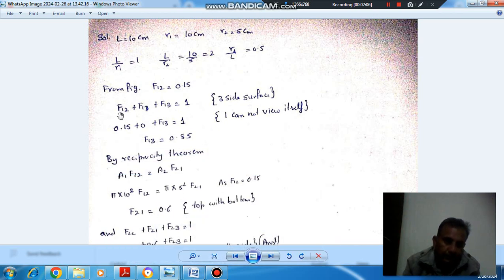Now we know that if we take surface 1 and consider all the possible shape factors, then the summation of the shape factors will be 1. The possible shape factors are F11, F12, F13 from surface 1. As 1 cannot see itself, so F11 is 0. F12 we have obtained from the graph, that is 0.15. So F13 is 0.85.